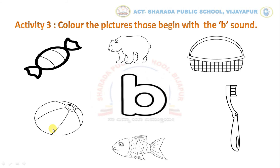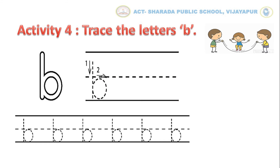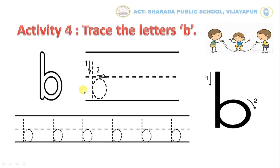So now color those pictures. In the same way, you have to complete the activity. Now let us move to activity number 4. Trace the letter B. Here you can see the arrow marks. Children, follow the given arrow marks and complete the letter B. First make a standing line, and then a curve. In the same way, you have to complete the activity.